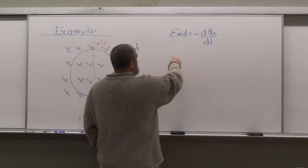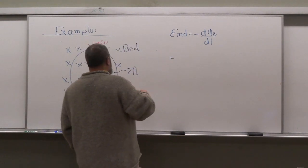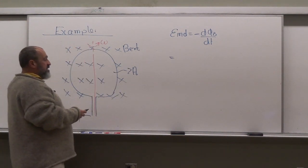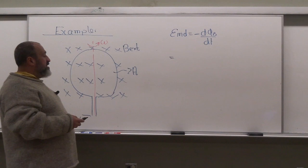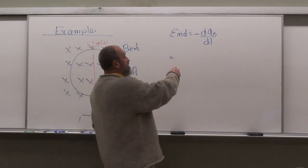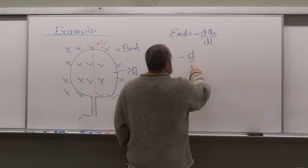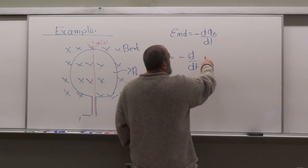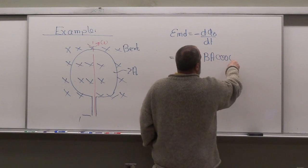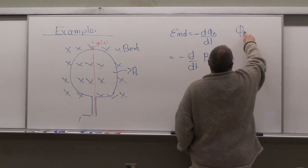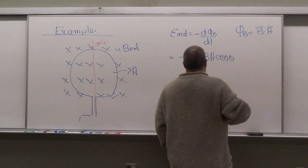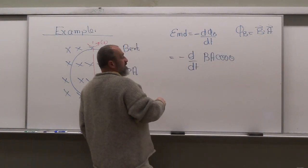So what is d phi magnetic by dt? Well, you've got an external magnetic field that is uniform and it doesn't change with time. You've got an area that doesn't change with time. But what changes in this case? Look at d phi magnetic by dt. d by dt of phi magnetic is integral of b dot dA, which is simply bA cos theta. Remember, phi magnetic in this case is just b dot A.